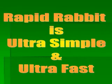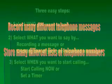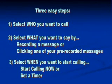Using RapidRabbit is ultra-simple and ultra-fast. You can record many different telephone messages for later use, and you can store many different lists of telephone numbers. Before calling, there are three easy steps. First, select who you want to call. Next, select what you want to say by recording a message or clicking on one of your pre-recorded messages. Then, select when you want to start calling. You can select Start Calling Now or set a timer to start and stop at specific times.